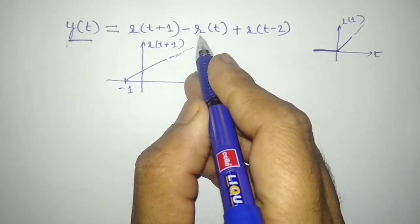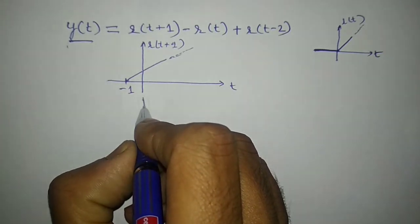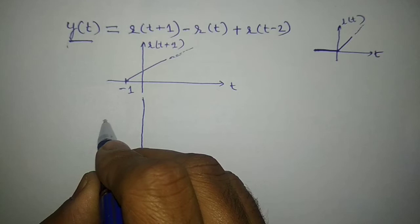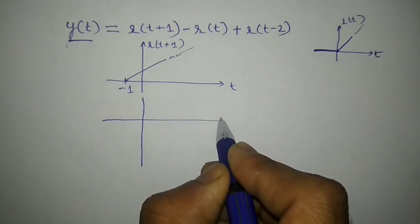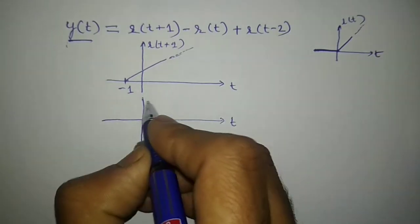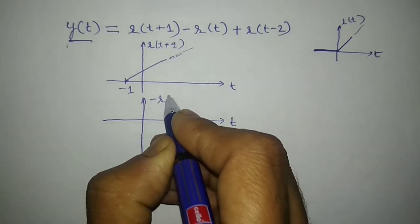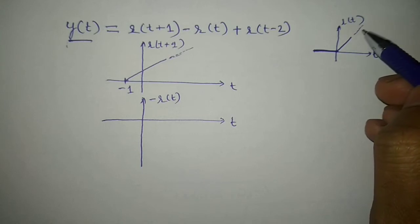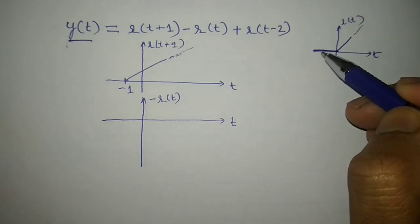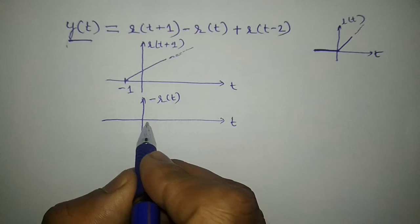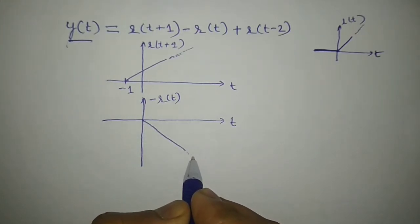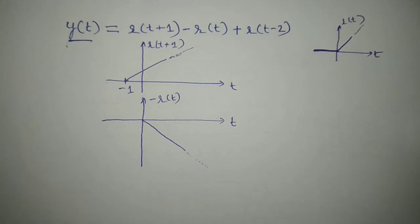Next I need to draw minus r(t). Drawing the y-axis and x-axis, I call this signal minus r(t). I know r(t) looks like a ramp. Minus r(t) has its amplitude made negative, so it looks like a decaying ramp going downward from 0.